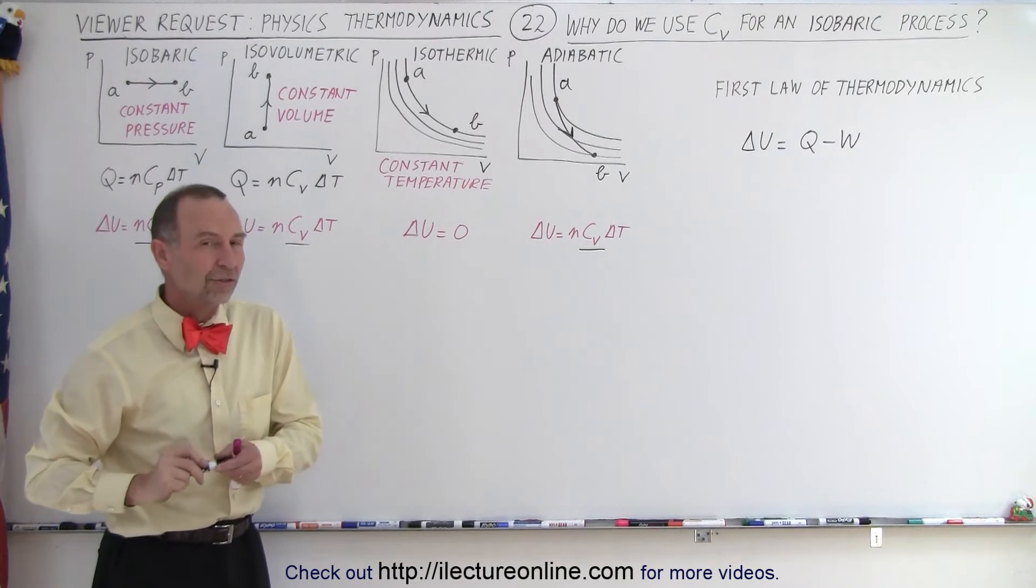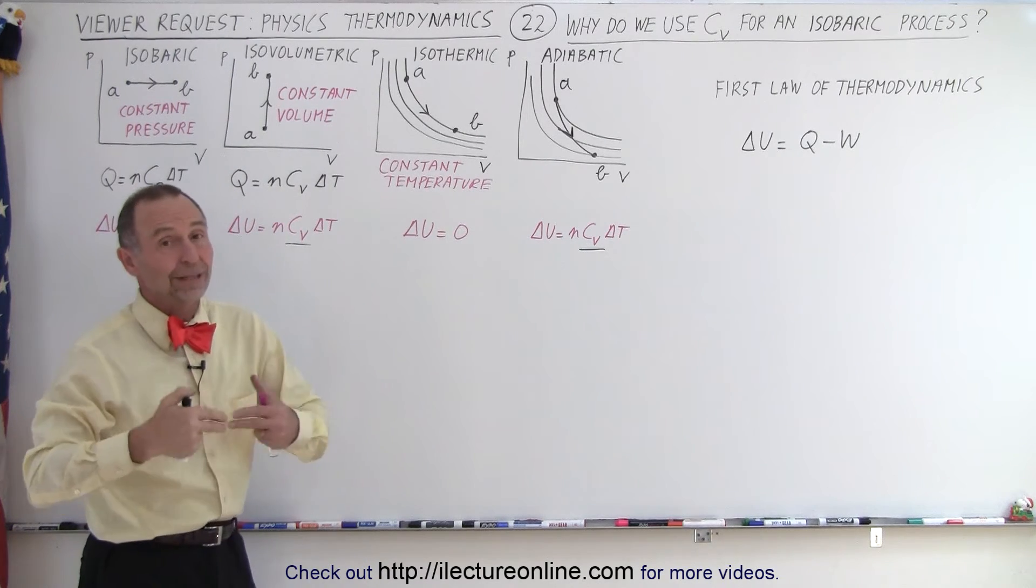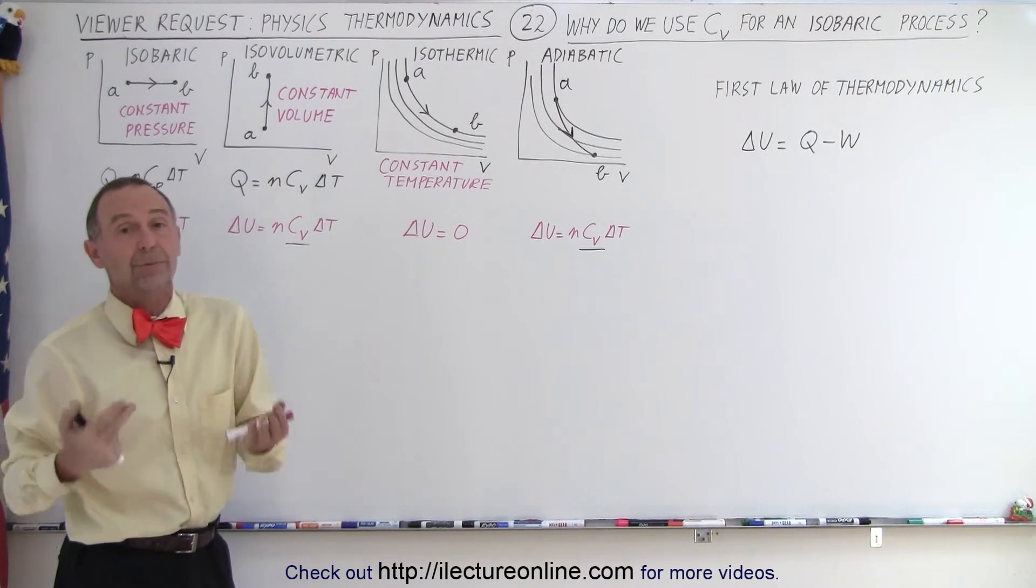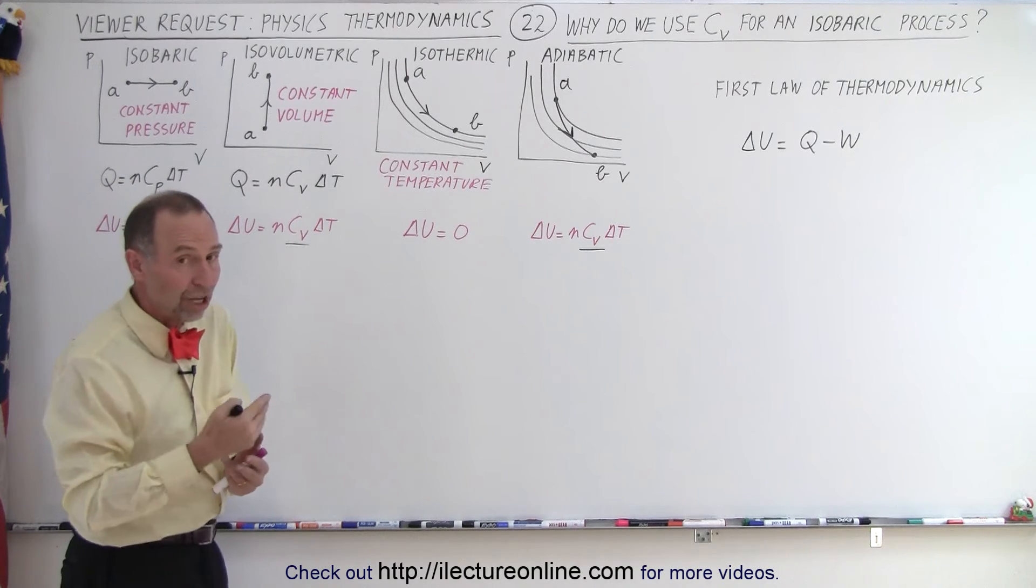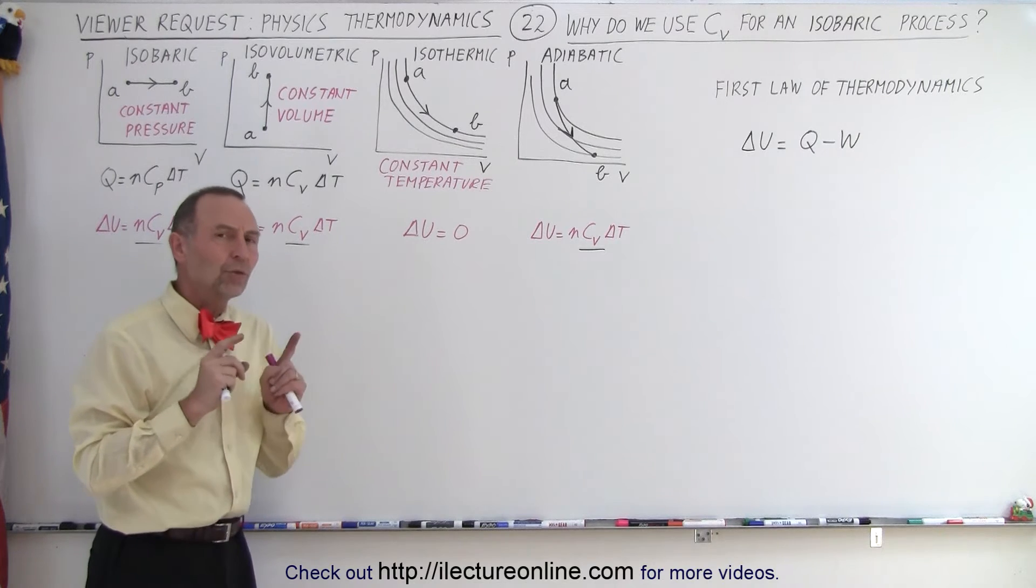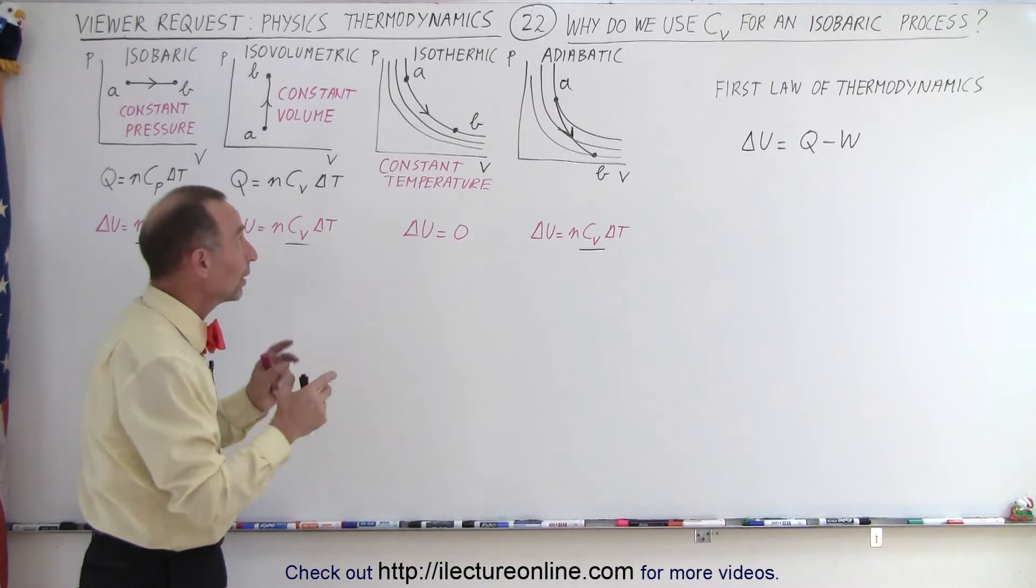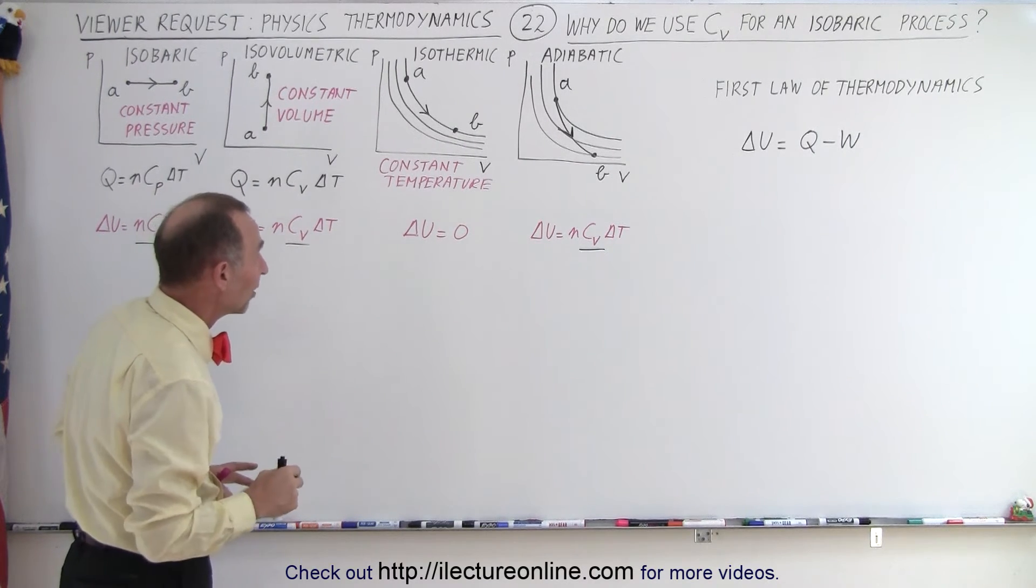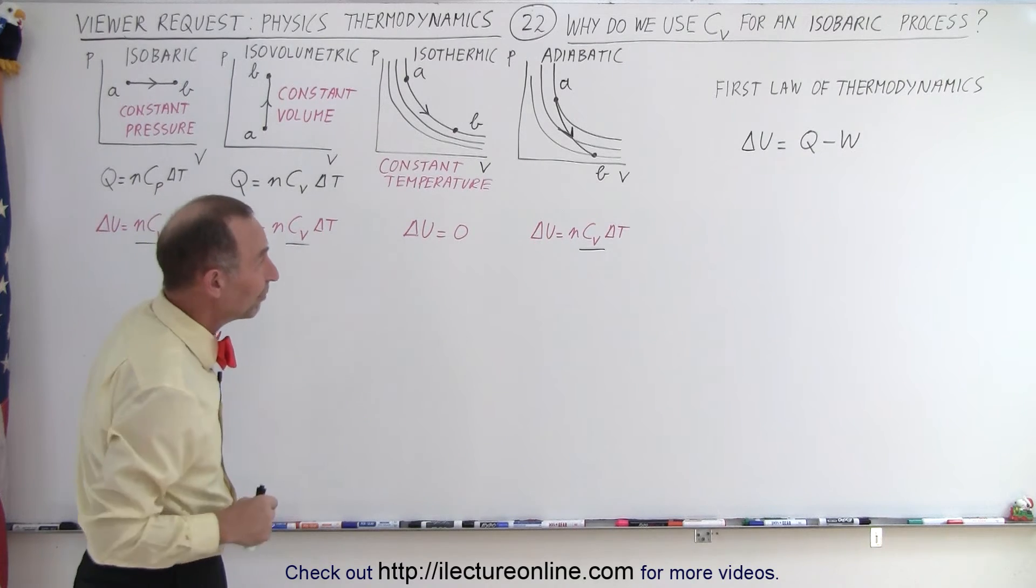In other words, when we have a constant temperature process, the internal energy cannot change because the temperature doesn't change. You can only have a change in internal energy if the temperature changes. So therefore, that is what confuses the students when they look at a thermodynamic process. Where does the C sub V come from?